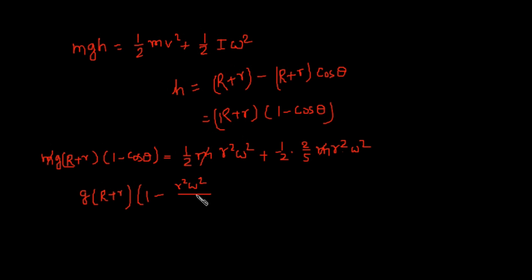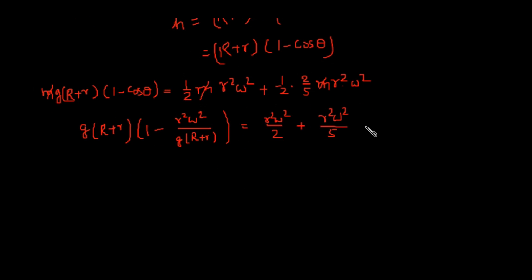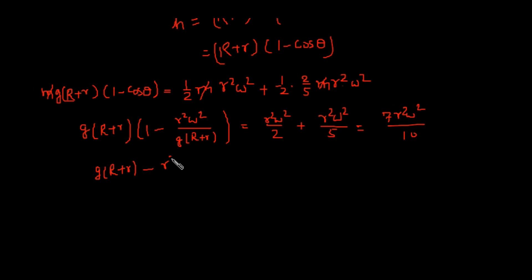Substituting cosθ = r²ω² / [g(R + r)], the left side becomes g(R + r) − r²ω². The right side gives (1/2)r²ω² + (1/5)r²ω² = (7/10)r²ω². So: g(R + r) − r²ω² = (7/10)r²ω², which gives g(R + r) = (17/10)r²ω².